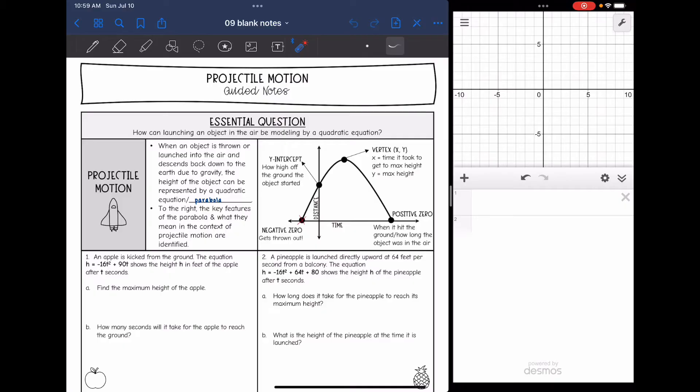When an object is thrown or launched into the air and descends back down to the earth due to gravity, the height of the object can be represented by a quadratic equation or parabola. To the right over here, I have the key features of the parabola and what they mean in the context of projectile motion.